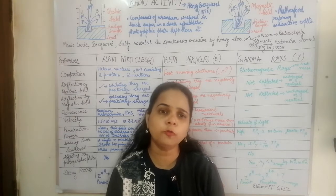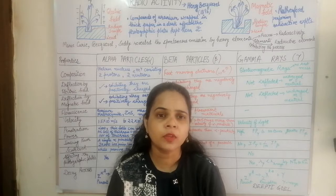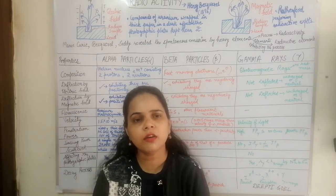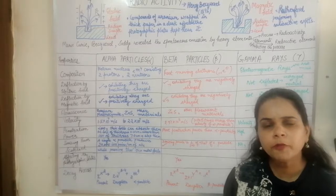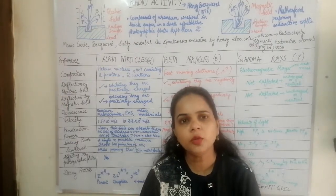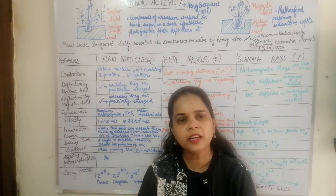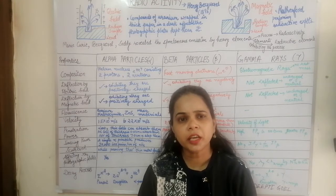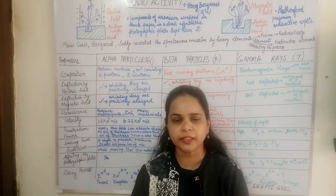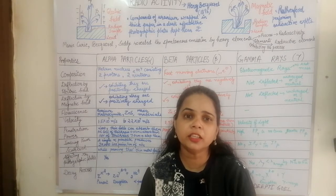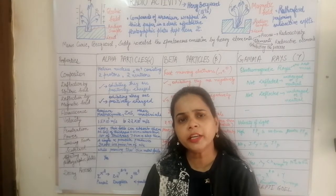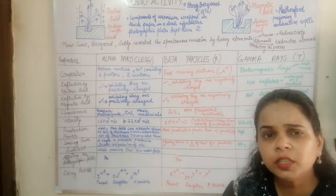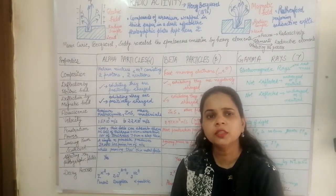These elements disintegrate to form a stable product nucleus. Radioactivity was discovered accidentally by Henry Becquerel in 1896. He found that uranium, wrapped in paper and kept near photographic plates, had affected those photographic plates, revealing some peculiar properties of uranium.